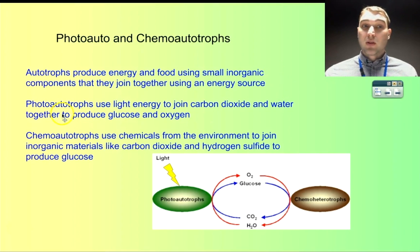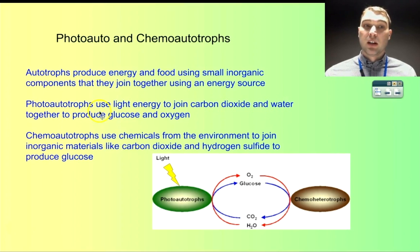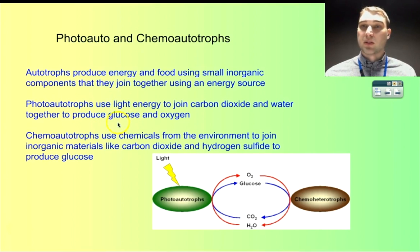Photo-autotrophs use light energy. They use light to join carbon dioxide and water together to make glucose. Carbon dioxide and water are both small inorganic compounds. You react them together using light to run the reactions that make glucose, which is a large organic compound. You also get oxygen as a waste product, and we'll talk about that later.